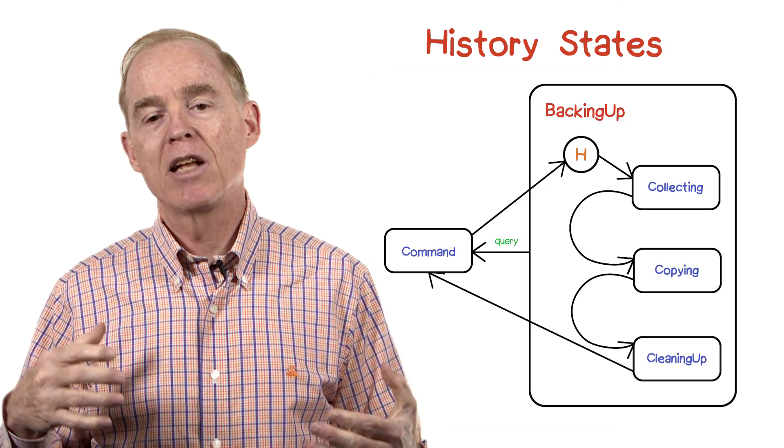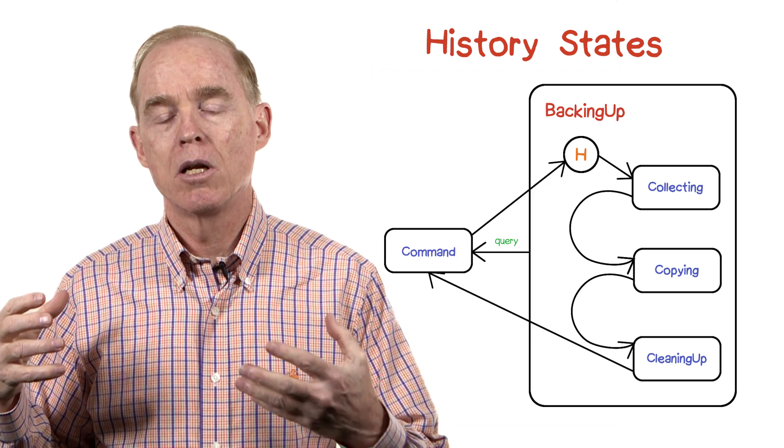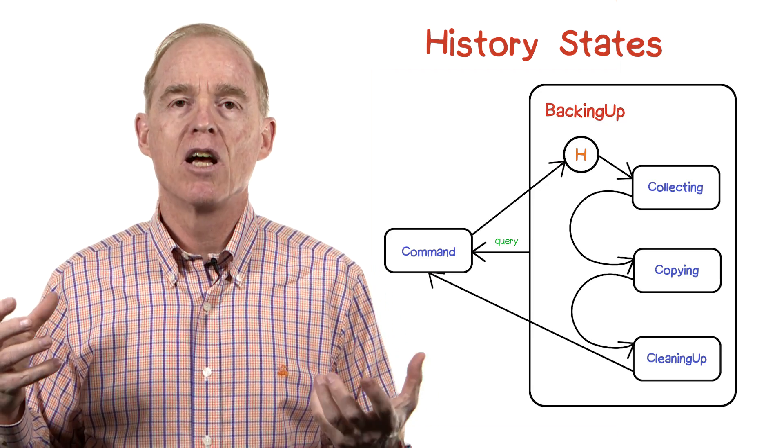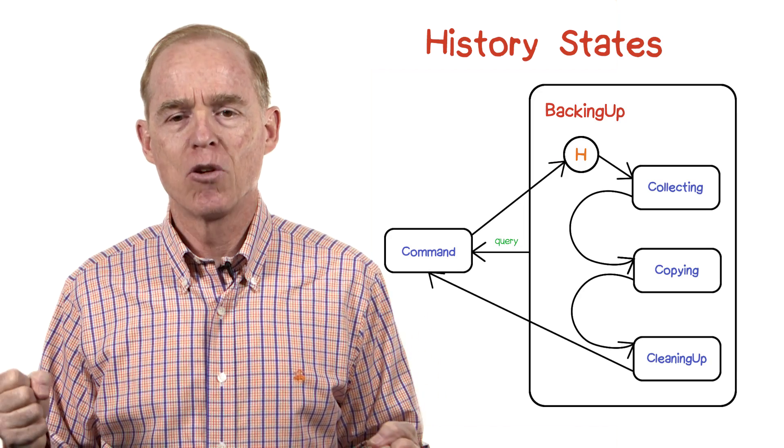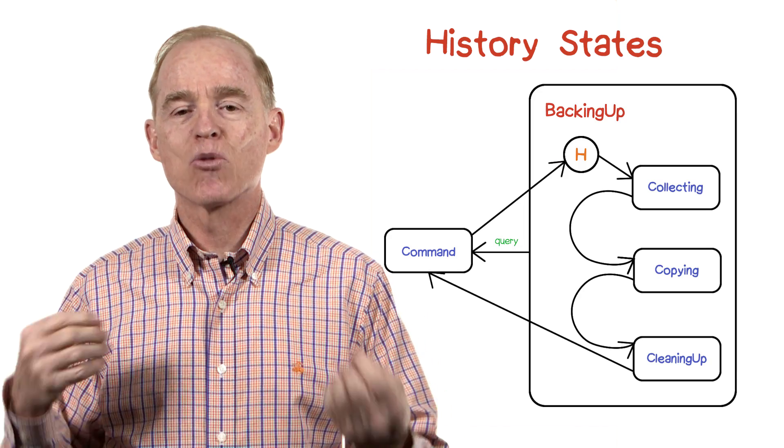And there's a transition from the command state to the nested state into a circle labeled with the label H. This is an example of a history state.